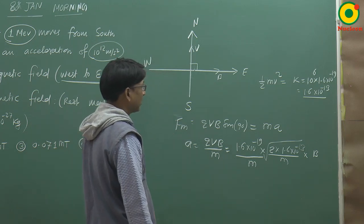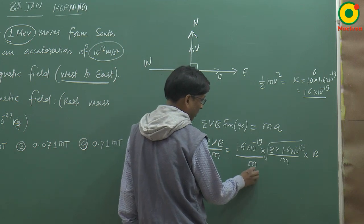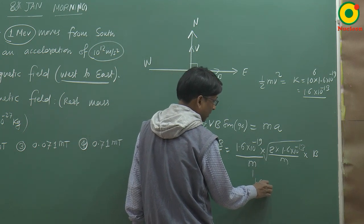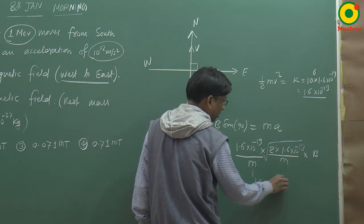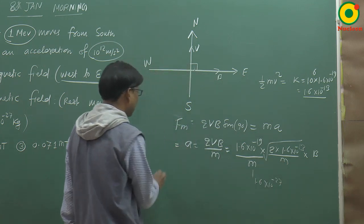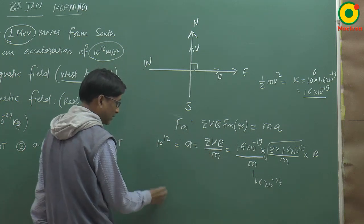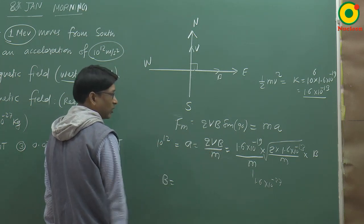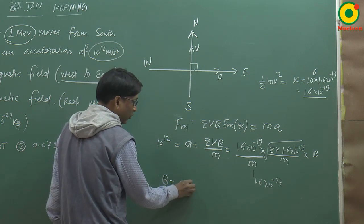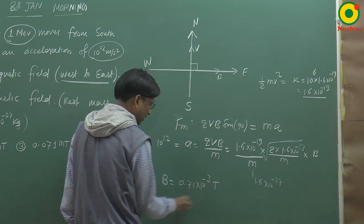Tho mass ka value bhi question me diya gaya hai. Mass ka value rakh sakte hai 1.6 into 10 to the power minus 27. Yahaan bhi rakhenghe. Aur acceleration diya gaya hai 10 to the power 12. Tho just yaha formula apply karna hai. Aur yahaan se magnetic field ka value nikal na hai. Tho yaha aayega 0.71 into 10 to the power minus 3 tesla.